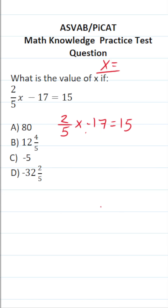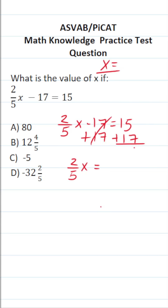The first thing I'm going to do is add 17 to both sides of the equation. In doing so, this crosses out, leaving me with two-fifths x over here. 17 plus 15 — if you can't do that mentally, do it the old-fashioned way: 5 plus 7 is 12, carry a 1; 1 plus 1 plus 1 is 3. So that gives us 32.